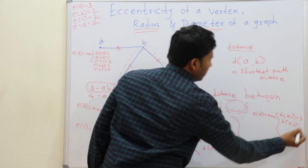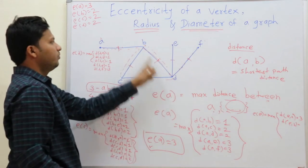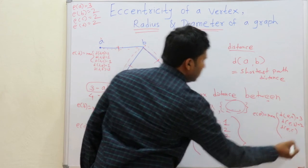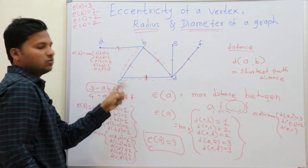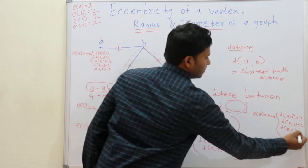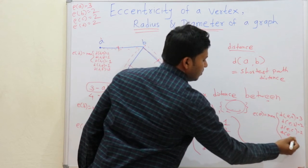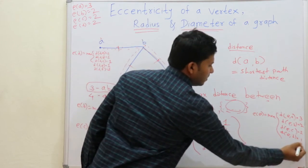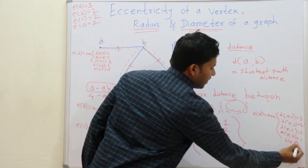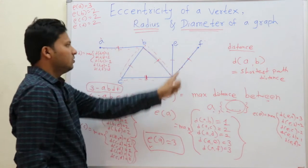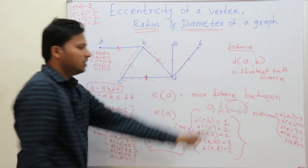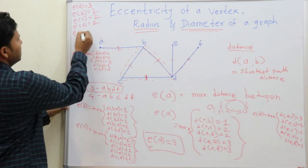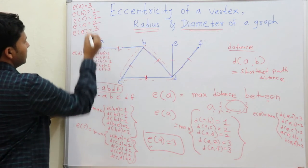Distance E to B is 2. Distance E to C is 2. Distance E to D is 1. And distance E to F is 2. The maximum out of these is 3, so the eccentricity of E is 3.